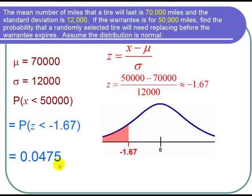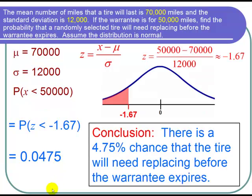And now I'm ready to state my conclusion. So I can conclude that there is a 4.75% chance—0.0475 is the same as 4.75%—that the tire will need replacing before the warranty expires. And I'm done with the problem.